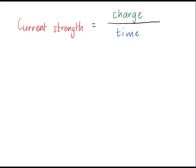Current strength is equal to charge per time. How much charge flows through each part of the circuit in how much time?